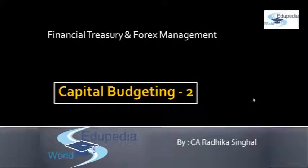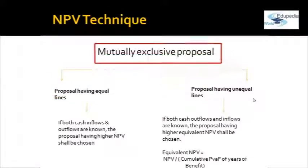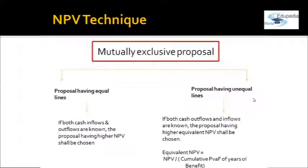We discussed NPV, where we compute the difference between the present value of inflows and outflows. Let's start from the NPV technique itself. If there is a mutually exclusive proposal — to reiterate, mutually exclusive proposals are those in which acceptance of one project means automatic rejection of all other proposals which are mutually exclusive to that project.